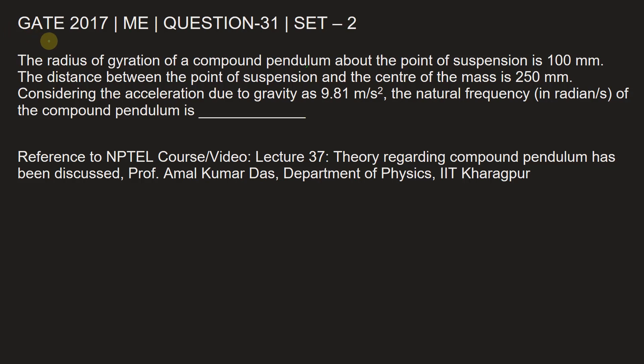This question is from GATE 2017 Mechanical Engineering paper, Set 2, Question number 31. The radius of gyration of a compound pendulum about the point of suspension is 100 mm.